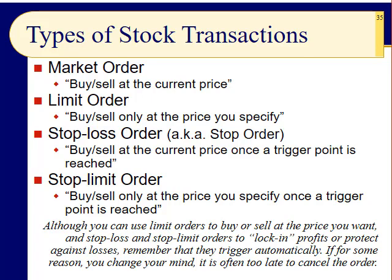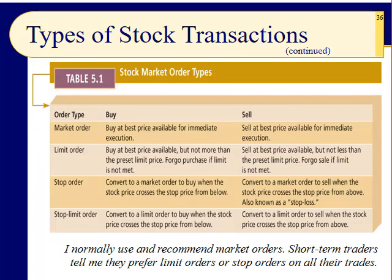Although you can use limit orders to buy and sell at the price you want, and stop-loss and stop-limit orders to lock in profits or protect against losses, remember that they trigger automatically. If for some reason you change your mind, it's too late — it happens in milliseconds. Slide 36 describes this in a table format. But I never use anything other than a market order. You want to buy? Buy. You want to sell? Sell. You're not guaranteed the other types will ever execute.